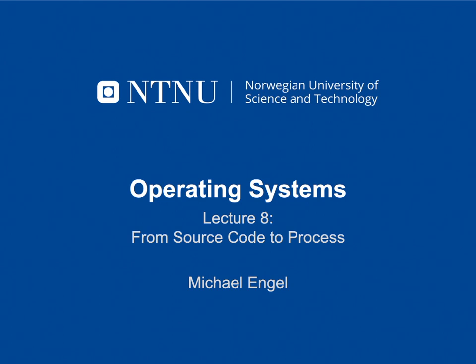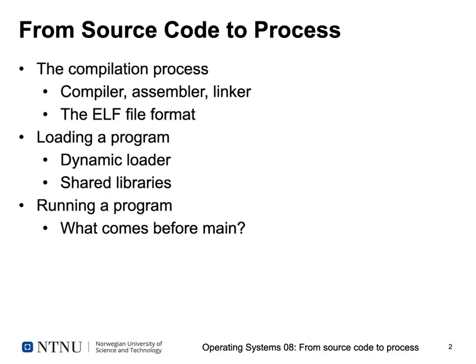This lecture is rather long so we split it into three sections. First we'll talk about the compilation process: what is the task of a compiler, assembler, and linker, how do they interact, and what is the result? The result is an executable file — on Unix systems it's called an ELF file. This ELF file can then be loaded by the operating system, using components including the dynamic linker and dynamic loader, and additional binary files called shared libraries.